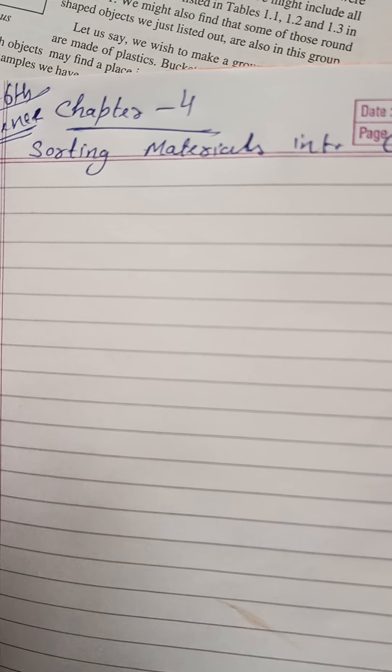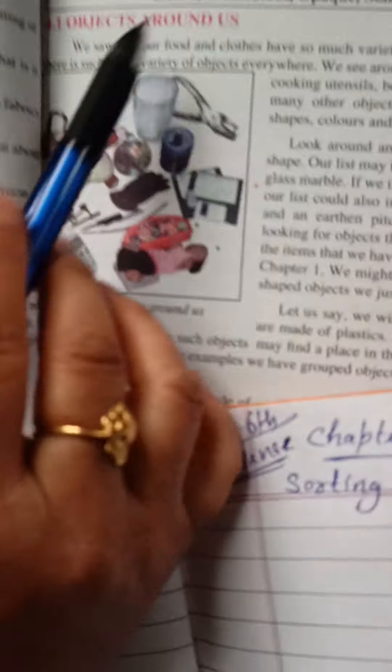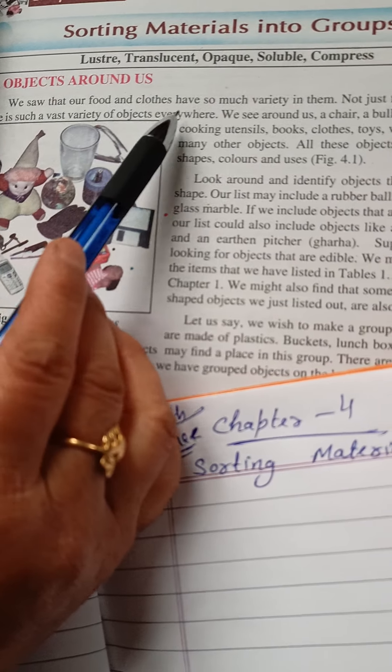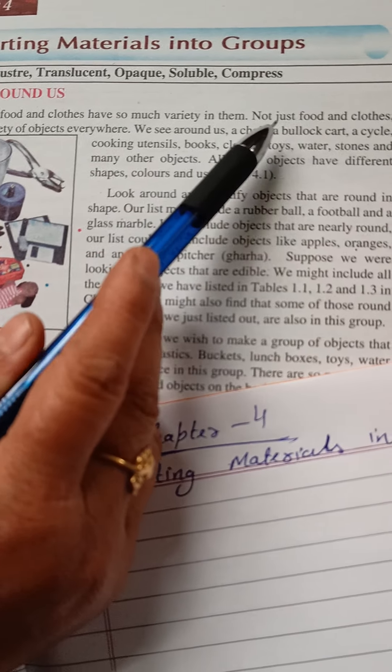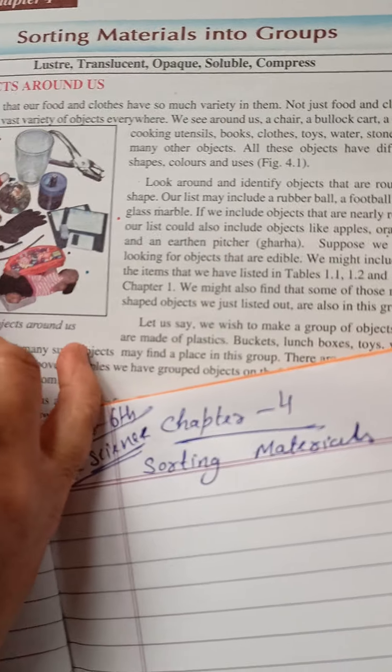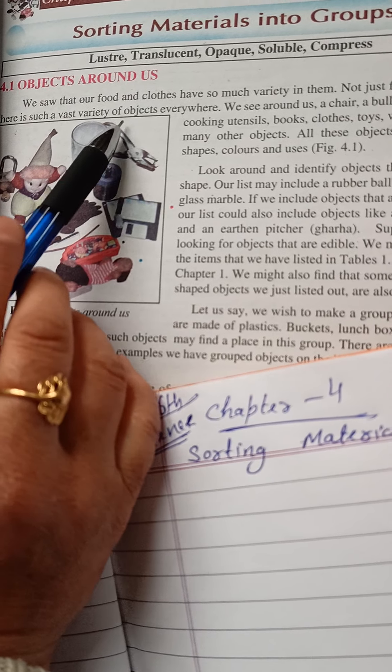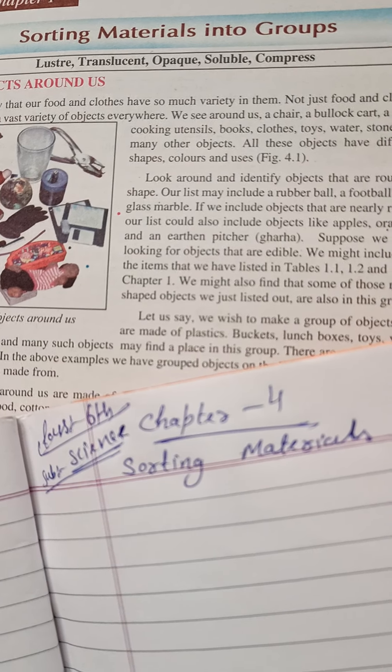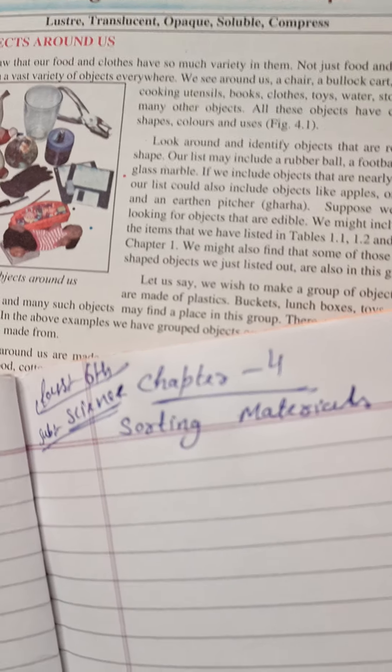We saw that our food and clothes have so much variety in them. Not just food and clothes, there is such vast variety of objects everywhere - the food, the clothes, everything around us has variety.